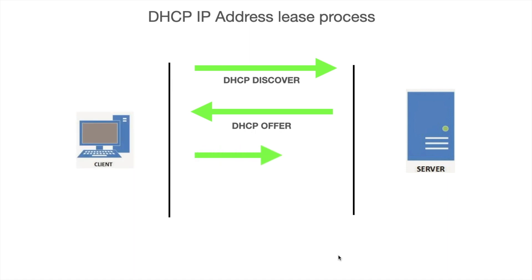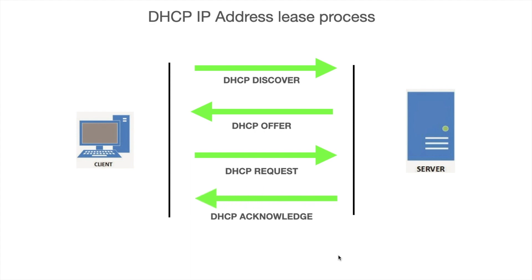Once that offer packet is received by the client, the client will send a request for that IP address. The client machine sends a request packet to the DHCP server with the IP address configuration details that were shared by the DHCP server, requesting: can I assign this IP address? Once that request is received by the DHCP server, the DHCP server sends back a packet with an acknowledgement. After acknowledgement, the client machine assigns that IP address to itself.